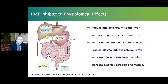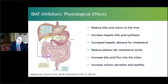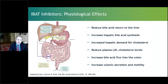This slide summarizes some of the major physiologic effects of IBAT inhibitors. First and foremost, IBAT inhibitors reduce bile acid return to the liver. In doing so, these IBAT inhibitors cause the liver to increase bile acid synthesis in response to the block in enterohepatic circulation. This increases the hepatic demand for cholesterol, and in response, the liver will increase LDL receptors and increase clearance of plasma LDL to compensate for this cholesterol deficit, thereby reducing plasma LDL cholesterol levels. Inhibition of IBAT will also result in increased bile acid flux into the colon, resulting in increased colonic secretion and increased colonic motility.